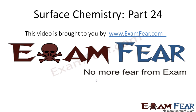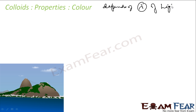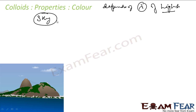Hello friends, this video on surface chemistry part 24 is brought to you by examphia.com. The next property is called color. The color of a colloidal solution depends on the wavelength of the light.